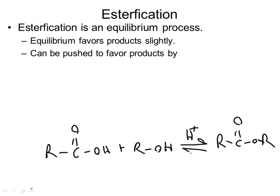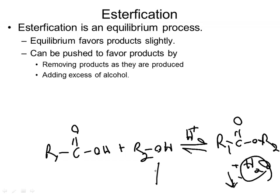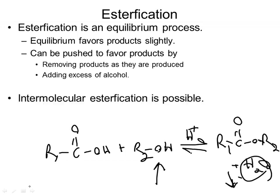There are a couple of ways to favor the product — the ester. What you can do is favor the products either by removing products as they're produced — so that could be removing water, putting something that absorbs water — then that will favor the products more. Or if we add an excess of alcohol, adding one of the reactants will favor the products more. So that's Le Chatelier's principle.